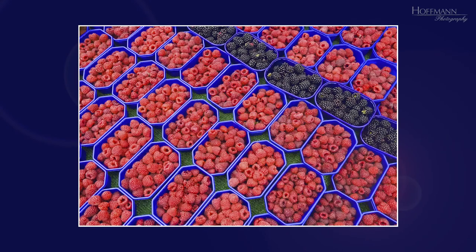Patterns are created when a large number of similar or identical objects appear in the image — in this case, the balls of raspberries. Most patterns are quite boring, though. Imagine this image without the row of balls with blackberries interrupting the pattern of the raspberry balls. It would be not very interesting.